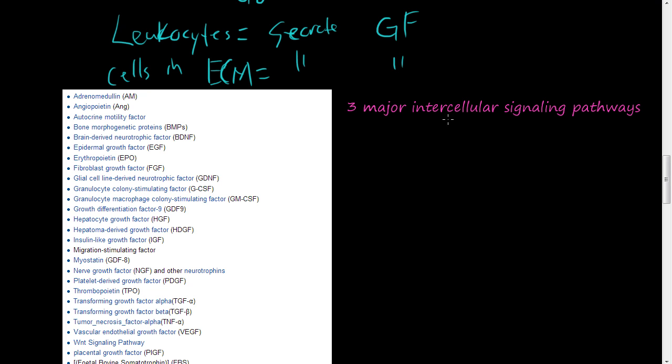There are three major intercellular signaling pathways. Inter means between, cellular refers to cells, so there's three ways by which cells communicate with regards to hormones. There's autocrine, paracrine, and endocrine.